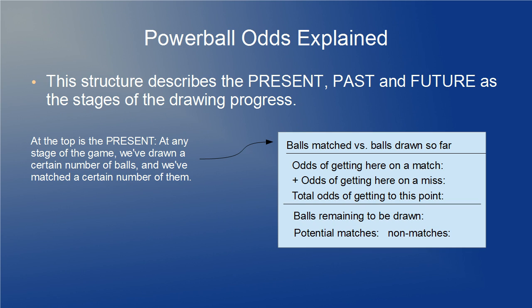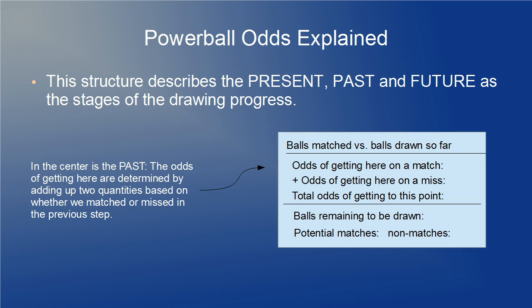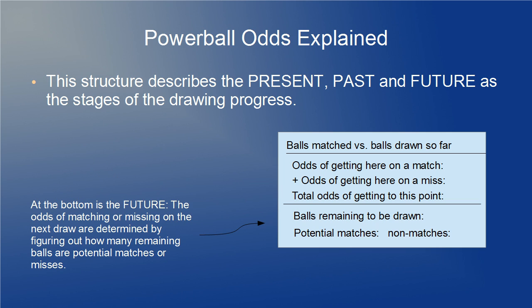At the top is the present: at any stage of the game we have drawn a certain number of balls and matched a certain number of them — this is the scorecard. In the center is the past: the odds of getting to this point are determined by adding up the odds from the previous step or steps that got us here. At the bottom is the future: the odds of matching or missing on the next draw are determined by figuring out how many balls remaining are potential matches or misses.